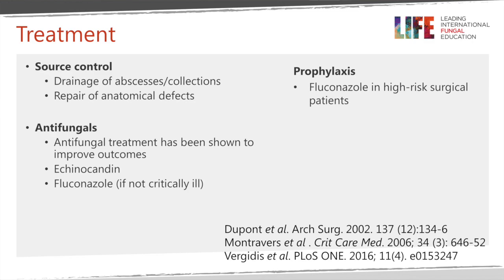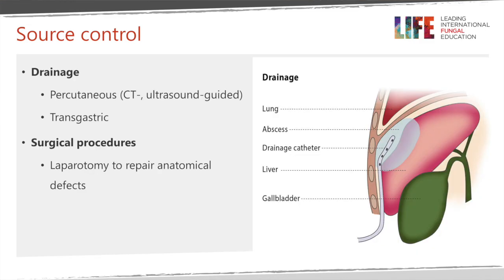Prophylaxis with fluconazole can be used when surgery involves a breach of the upper gastrointestinal tract, such as a gastric ulcer perforation. Source control remains key and can be achieved by percutaneous drainage under CT or ultrasound guidance, transgastric aspiration and drainage in certain cases, or surgical procedures such as laparotomy to repair anatomical defects and drain infected collections.